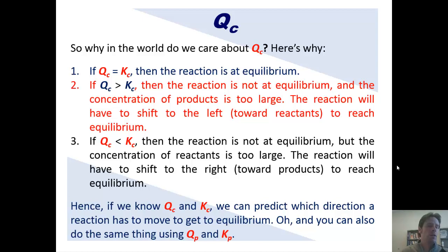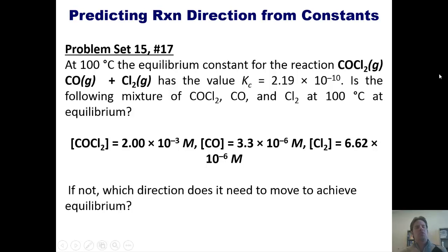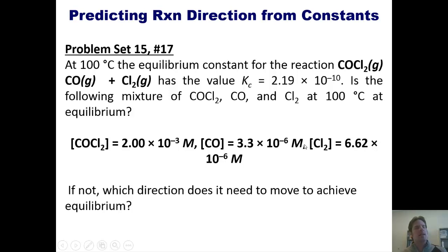That takes us to a wonderful problem. At 100 degrees Celsius, the equilibrium constant for this reaction right here has a value KC equal to a specific number. Is the following mixture of these different ingredients at equilibrium? It gives us the individual concentrations of those three ingredients. If not, in what direction does it need to shift to achieve equilibrium?